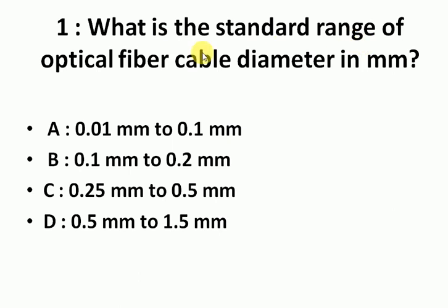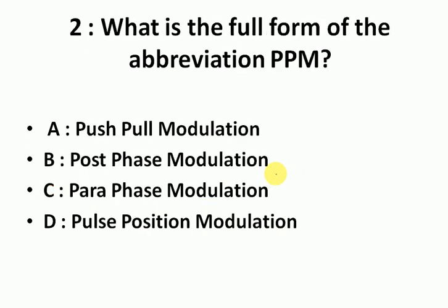What is the standard range of optical fiber cable diameter in mm? The answer is 0.25 mm to 0.5 mm to standard gauge optical fiber. What is the full form of abbreviation PPM? The answer is Pulse Position Modulation. Electronic mechanic is very important to know that Pulse Position Modulation.